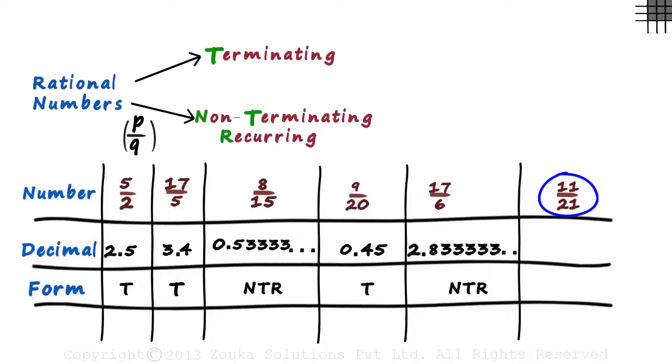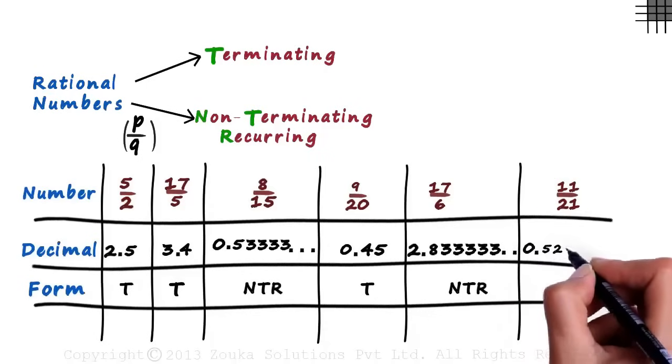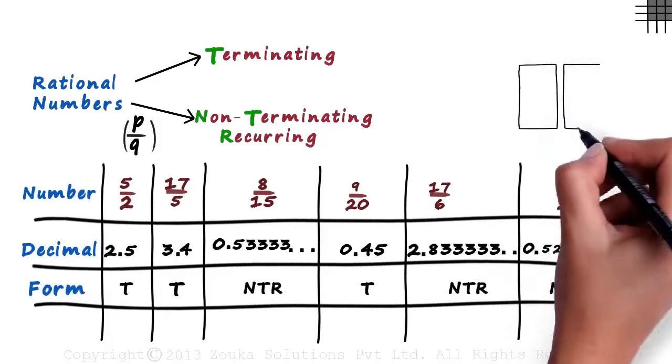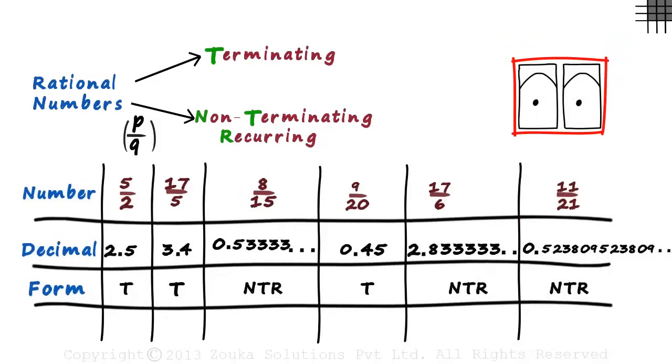And 11 by 21 equals 0.523809, 523809 and so on. This part is repeated. So it's a non-terminating recurring fraction. Imagine trying to do all of this without a calculator. That's how your eyes would look. Stunned! Don't worry. There's a quick way.